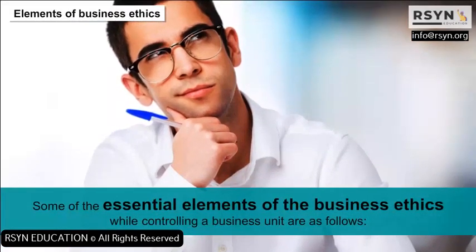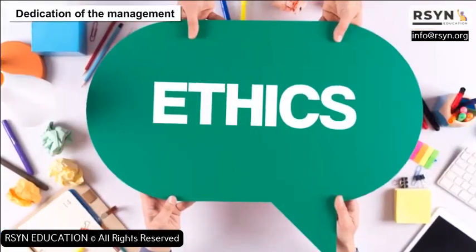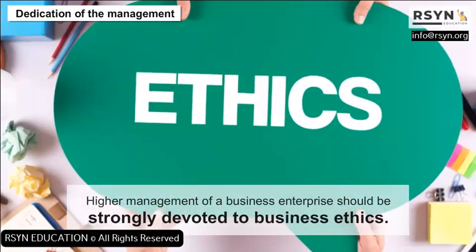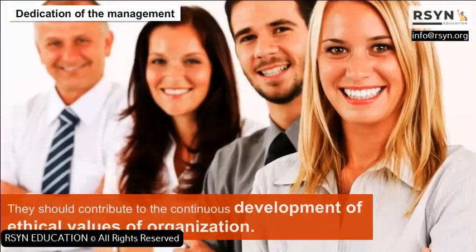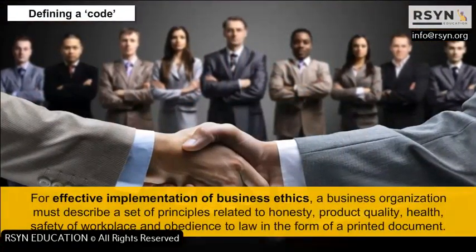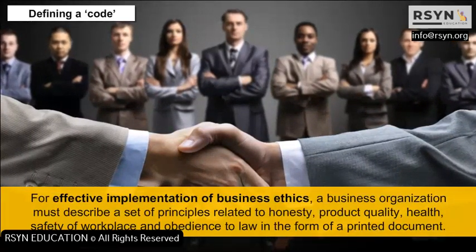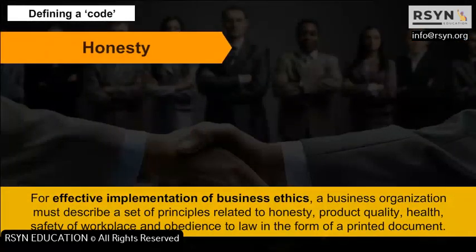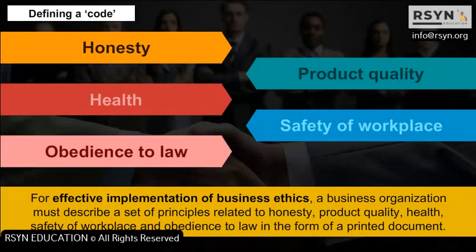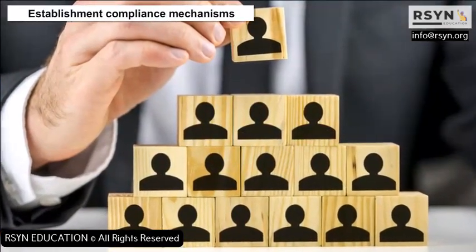Social interests should be taken care of along with business objectives, by following the moral principles of the society even if government law is not enacted for it. Elements of business ethics: Some of the essential elements of business ethics while controlling a business unit are as follows. Dedication of the management: Higher management of a business enterprise should be strongly devoted to business ethics and contribute to the continuous development of ethical values of the organization. Defining a code for effective implementation of business ethics: A business organization must describe a set of principles related to honesty, product quality, health, safety of workplace and obedience to law, in the form of a printed document.